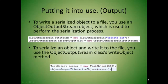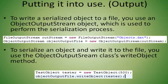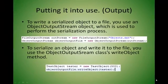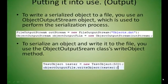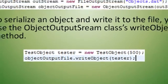To write a serialized object to a file, you must use the ObjectOutputStream, which is used to perform the serialization process. To serialize and write an object to the file, you use the writeObject method, as shown here.